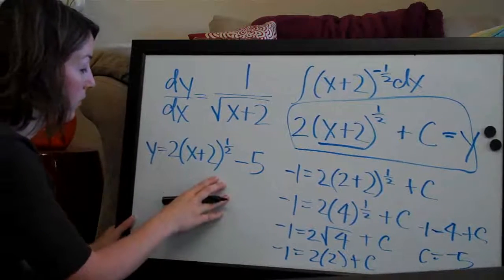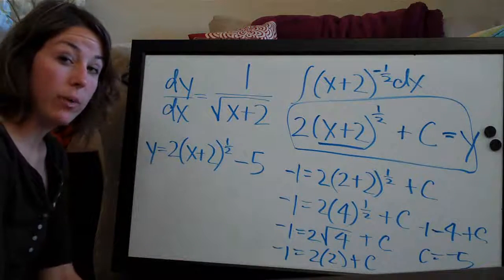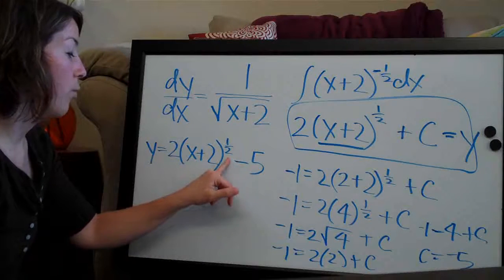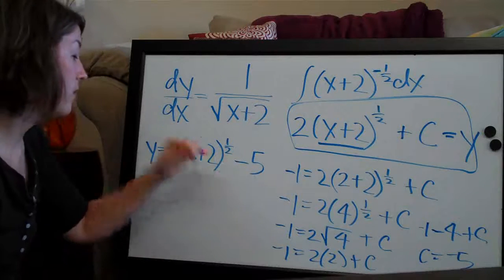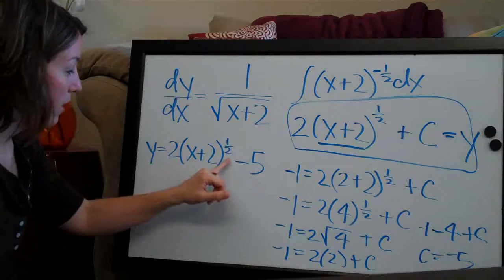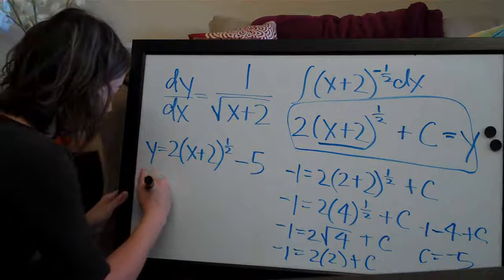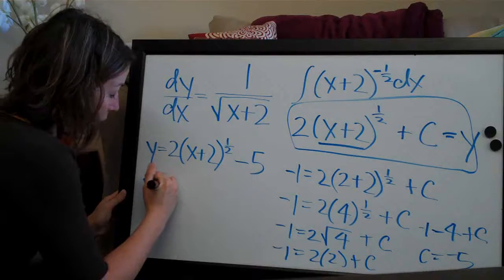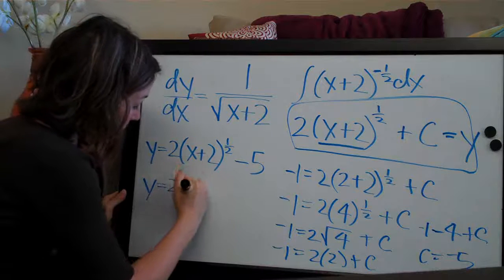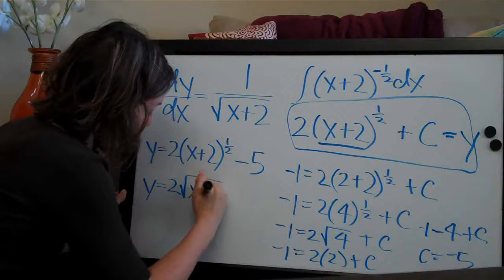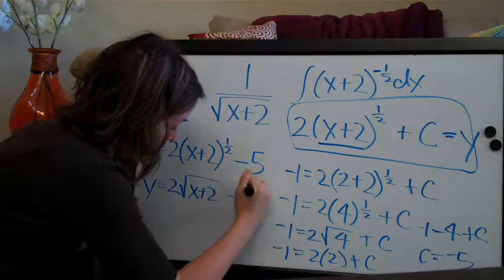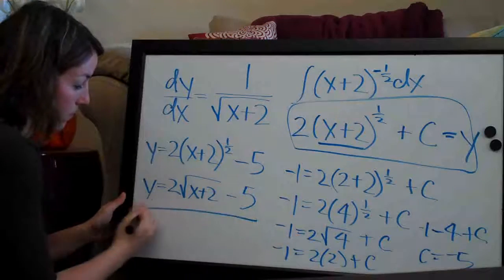So this is our function and you could leave it this way, but 1 half as an exponent is a little bit messy, so I would just like to change that to a square root. So I'm going to say that the final answer to this problem is y equals 2 times the square root of x plus 2 minus 5. There you have it.